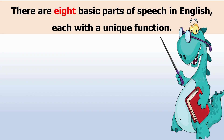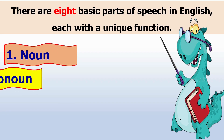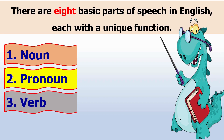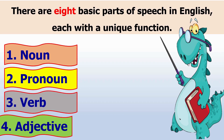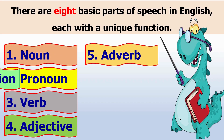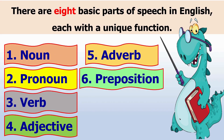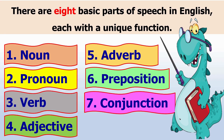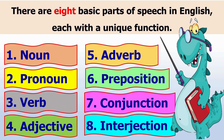There are 8 basic parts of speech in English: noun, pronoun, verb, adjective, adverb, preposition, conjunction, and interjection.